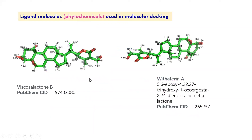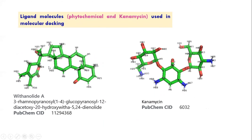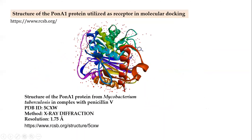These are the phytochemicals that can be isolated from Withania somanifera—a medicinal plant with very active phytochemicals capable of inhibiting the growth of Mycobacterium in vitro. These are: Viscosalactone B (with its PubChem ID), Withaferin A (with its chemical name and PubChem ID), and Withanolide A. All are shown as 3D structures. Kanamycin is the conventional antibiotic used against tuberculosis-infected patients.